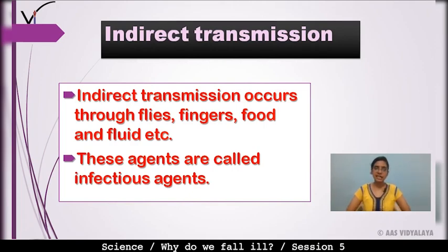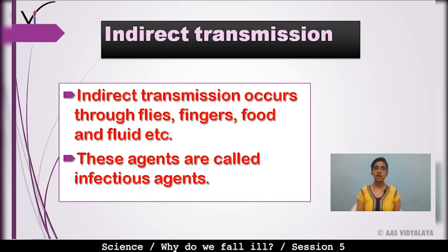Indirect transmission occurs through flies, fingers, food, and fluids. Wherever there are flies, contaminated food, or fruits, indirect transmission can happen through these agents. These agents are called infectious agents.